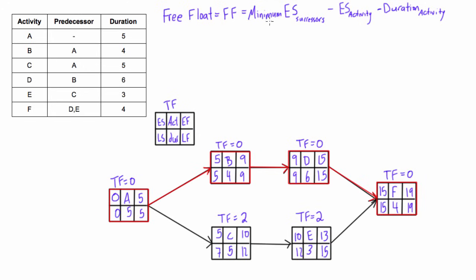The formula for free float is: free float equals the minimum early start of all successors, minus the early start of the activity you're looking at, minus the duration of that activity. For example, activity A has two successors, B and C, so we take the minimum early start of those two. We'll write the free float below each node.